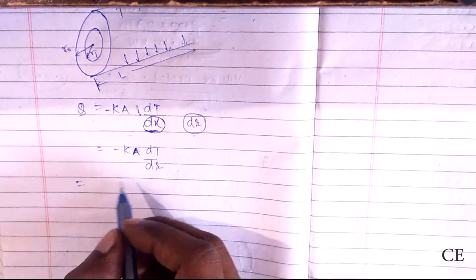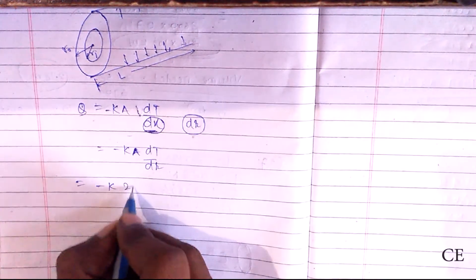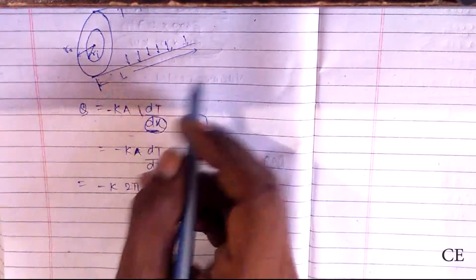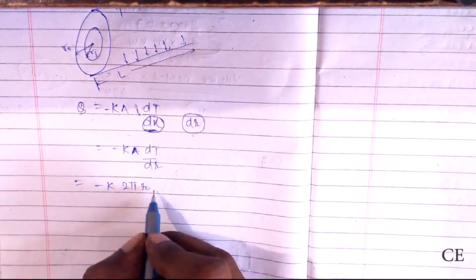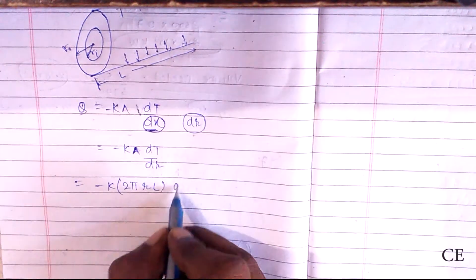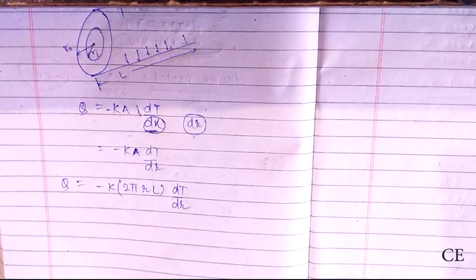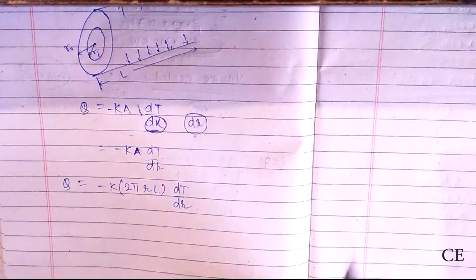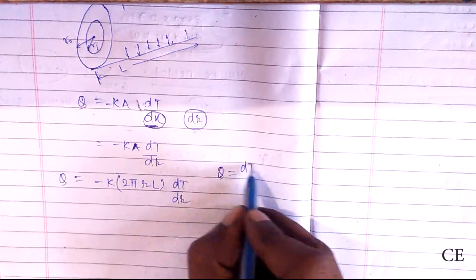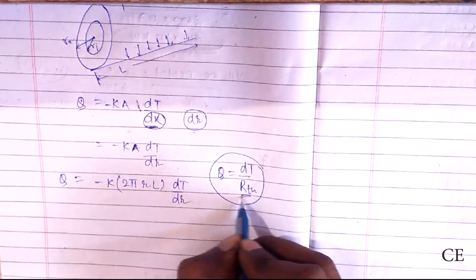The area of a cylinder is 2πRH, so substituting: Q equals negative K times 2πR times L times dT/dR. We need to find Q in terms of the temperature difference and the thermal resistance Rth.